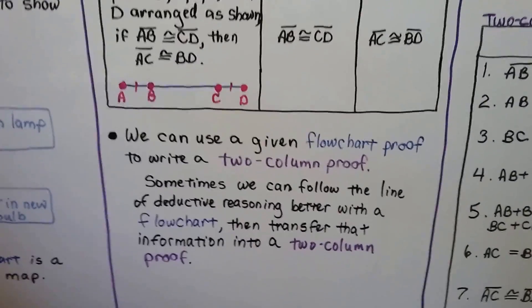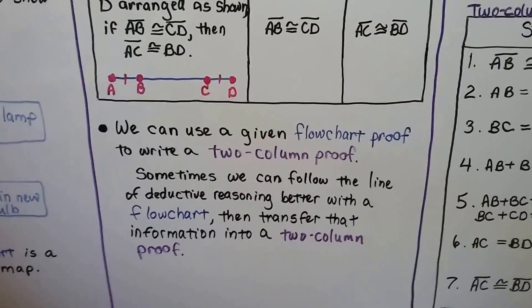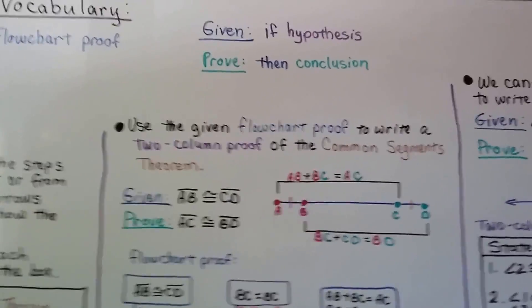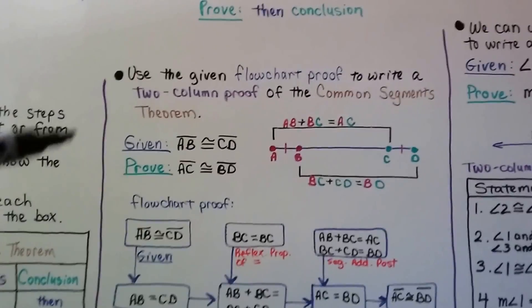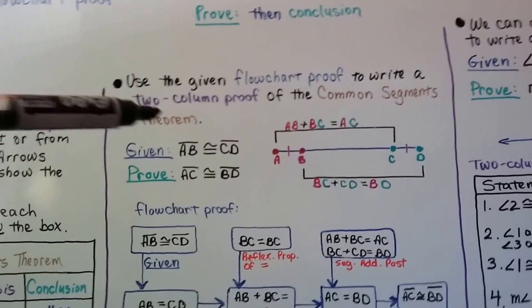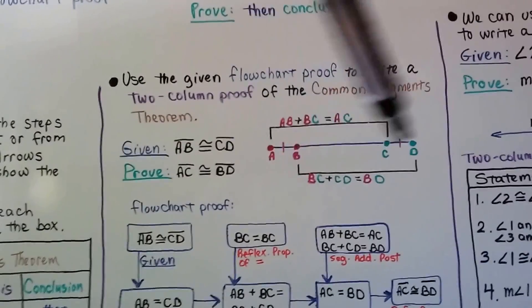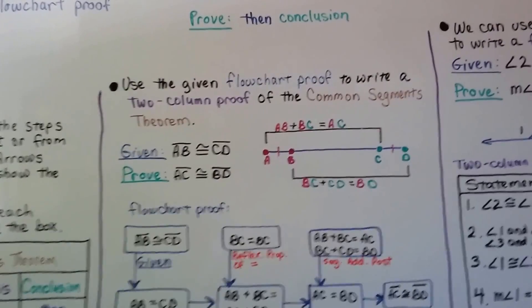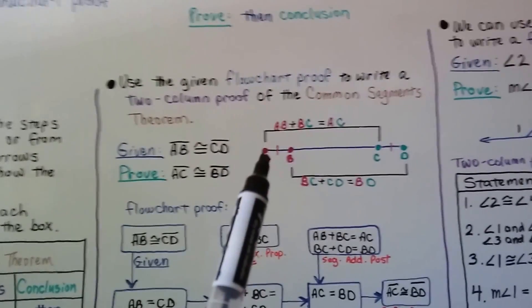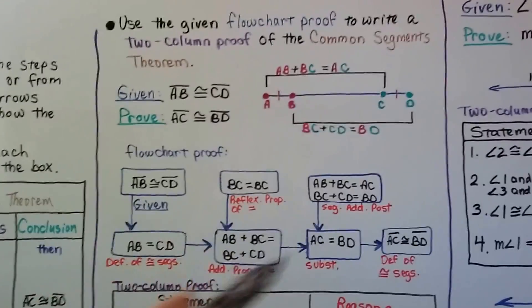We can use a given flowchart proof to write a two-column proof. Sometimes we can follow the line of deductive reasoning better with a flowchart, then transfer that information into a two-column proof. So we're going to use the given flowchart proof to write a two-column proof of the Common Segments Theorem. We have our given — that's our if — and our prove — that's our then, the hypothesis and conclusion. So we've got segment AB is congruent to segment CD.